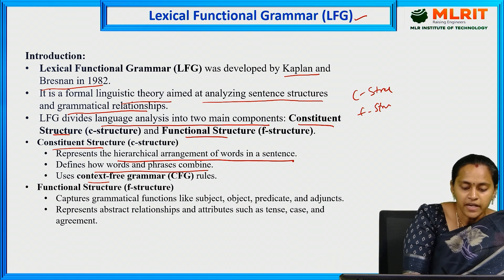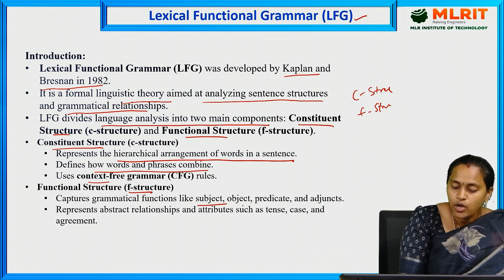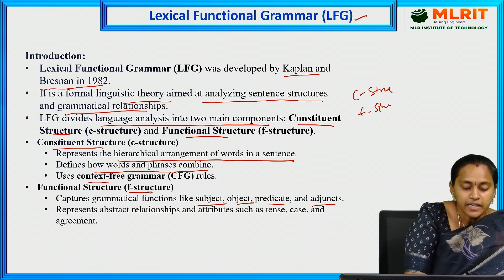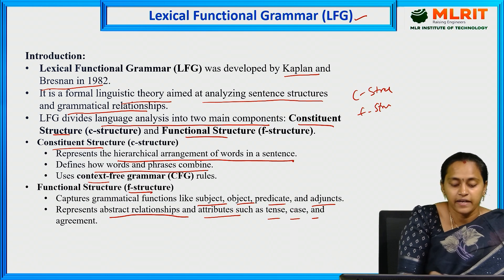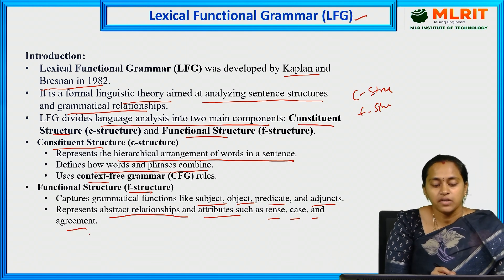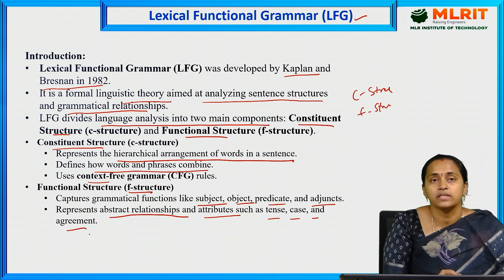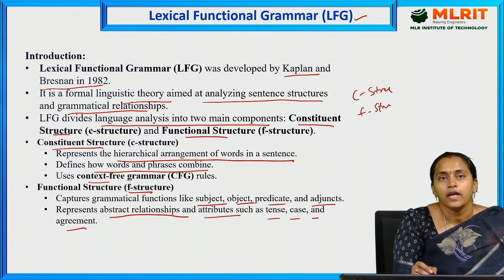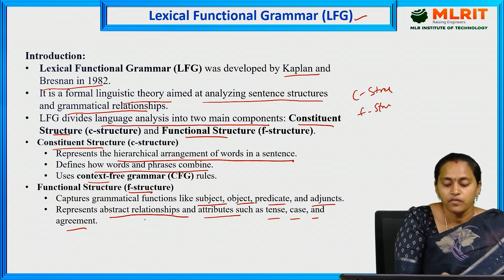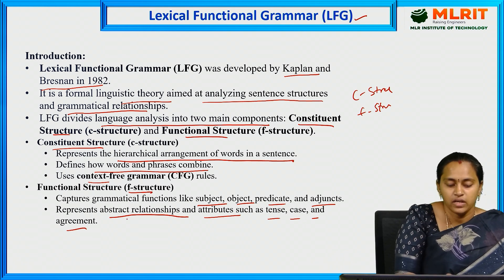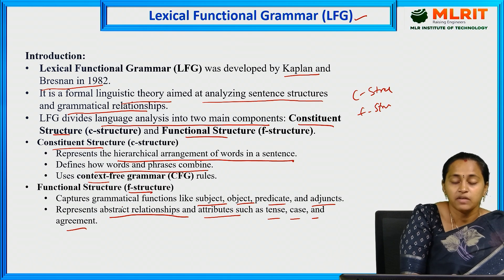In F-structure, it captures the grammatical functions like subject, object, predicate, and adjuncts. It also represents abstract relationships and attributes such as tense, case, and agreement. In the F-structure, we define what is the subject, what is the object, and what is the predicate of a particular sentence.